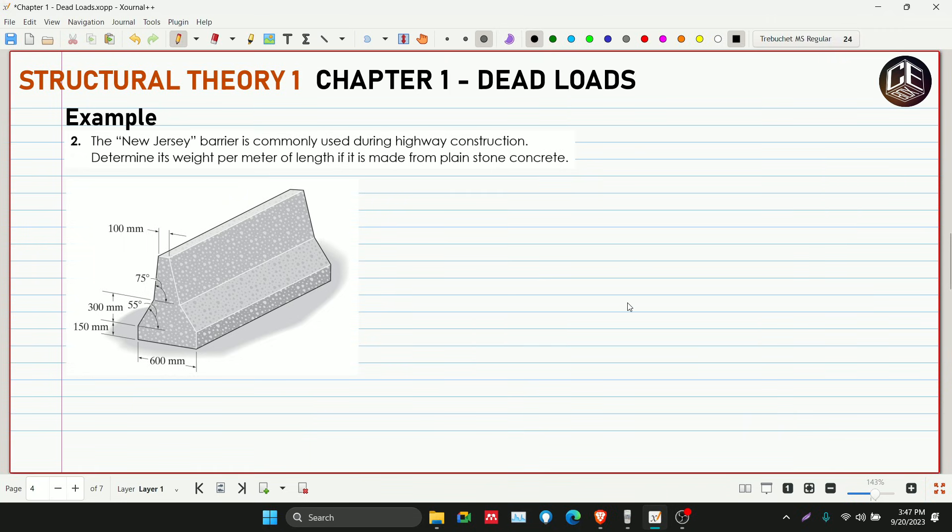Hello guys, welcome back to Seabass Tutorial channel and this is our example number 2 for chapter 1, Deadloads of Structural Theory 1. The New Jersey Barrier is commonly used during highway construction. Determine its weight per meter of length if it is made from plain stone concrete. Before we start to solve this problem, don't forget to subscribe and hit the bell icon for notifications and updates on our YouTube channel.